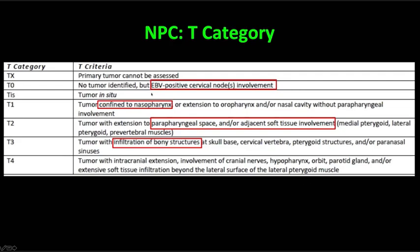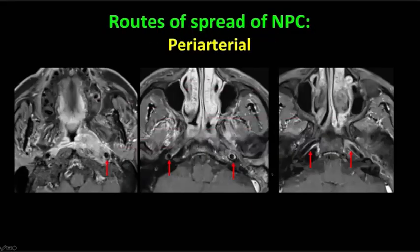So let's look at the T criteria. An interesting criterion is the T category of T0: the association between nasopharyngeal carcinoma and Epstein-Barr virus is so strong that even if there is no visible tumor in the nasopharynx, if EBV is present within a biopsied cervical lymph node, the tumor is presumed to be NPC and assigned a T category of zero. T1 tumors are confined to the nasopharynx. T2 tumors can spread to the parapharyngeal space and adjacent soft tissues, typically the medial/lateral pterygoid and the prevertebral musculature. T3 tumors invade bony structures at the skull base or the paranasal sinuses. T4 tumors have intracranial extension, cranial nerve involvement, inferior extension to the hypopharynx, orbit, parotid — basically very advanced tumors.